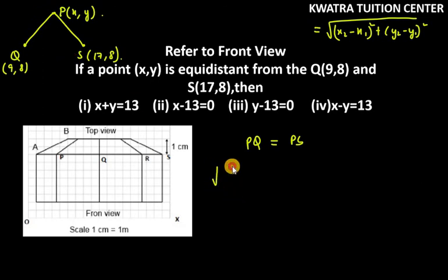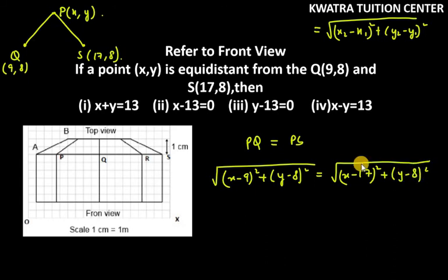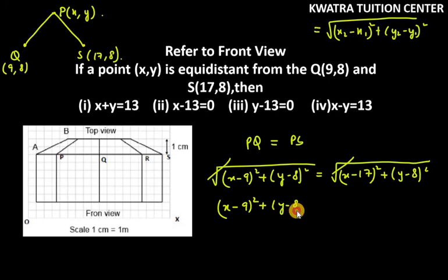So PQ equals: square root of (x minus 9) squared plus (y minus 8) squared, equal to square root of (x minus 17) squared plus (y minus 8) squared. The square roots cancel from both sides, leaving: (x minus 9) squared plus (y minus 8) squared equals (x minus 17) squared plus (y minus 8) squared.